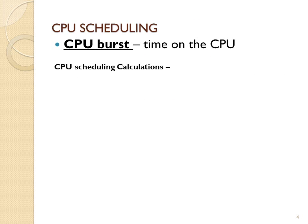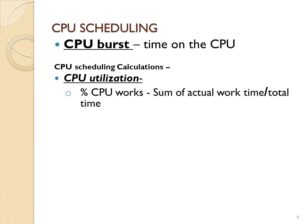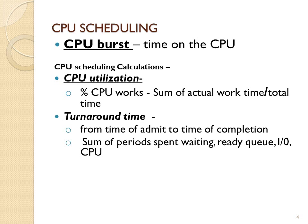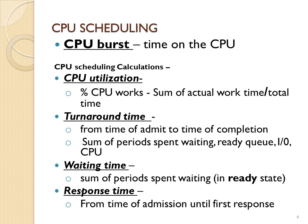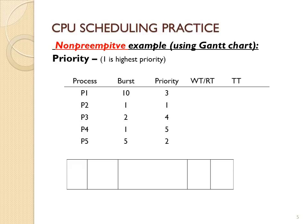Just to remind you about the calculations, we will be calculating turnaround time, wait time, and response time — per process and then averages. First we will start with a non-preemptive example called priority. In this case all processes have arrived at time zero at the same time, but we're going to queue them up and use the algorithm where priority one is the highest.